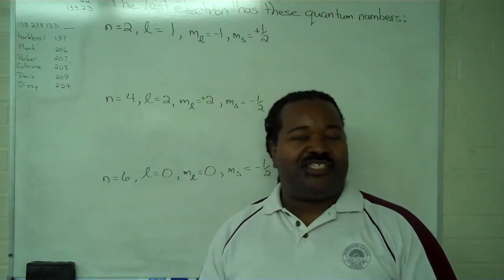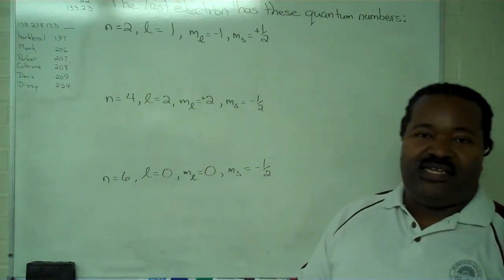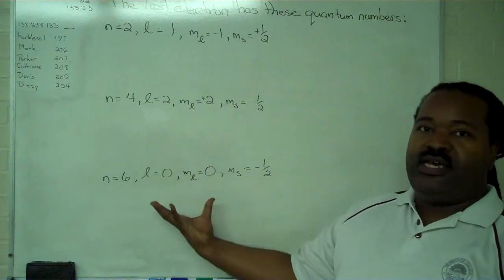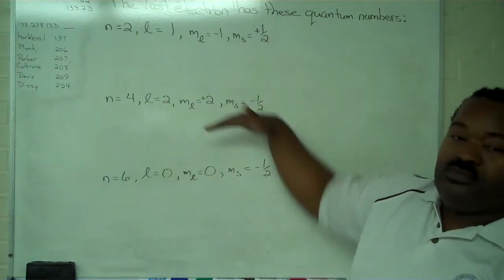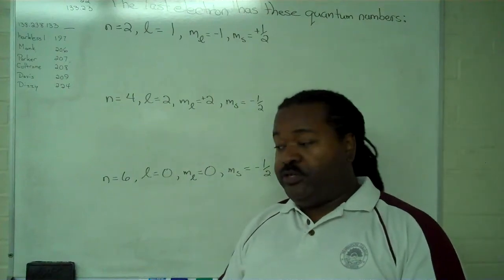This instructional video is designed to show you how to determine the identity of an element when you're given a set of quantum numbers for its last electron. And we'll do all three of these in order.